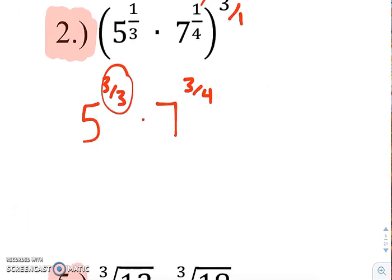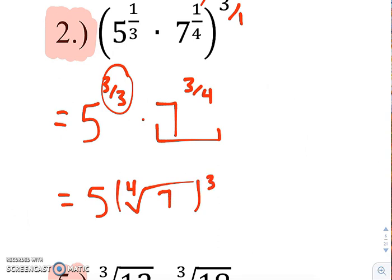So 3 thirds is just 1. So 5 to the first power, and we're just going to rewrite 7 to the 3 fourths in radical form because we can't have an exponent still in rational form.